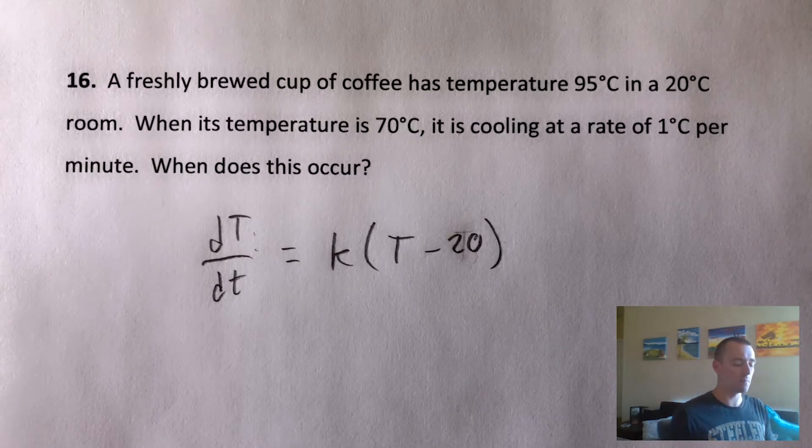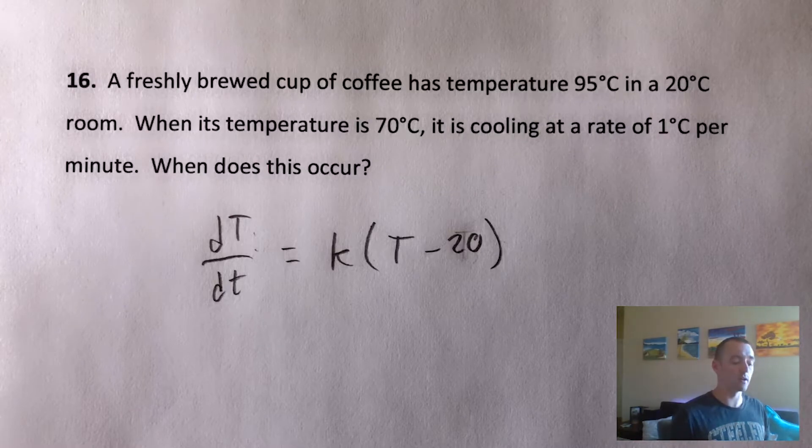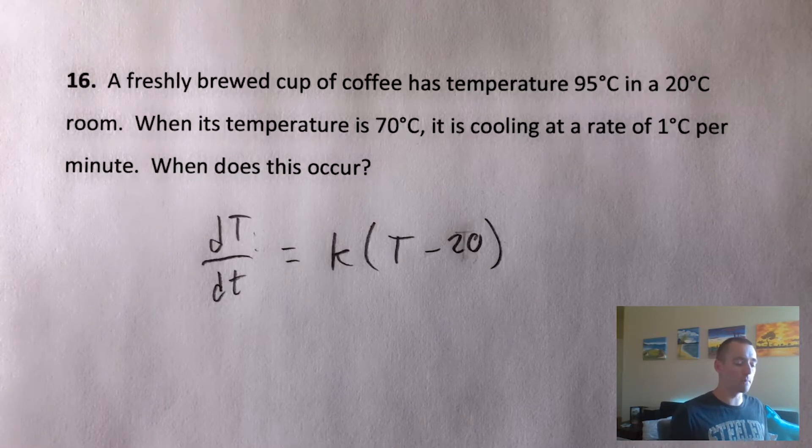But it doesn't tell us the temperature at some later time. It's asking us to figure out when the temperature is 70, but it doesn't tell us when it is something. What it tells us instead is the rate that it's cooling at 70 degrees.